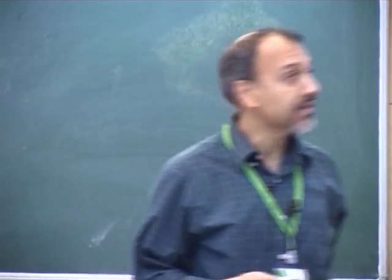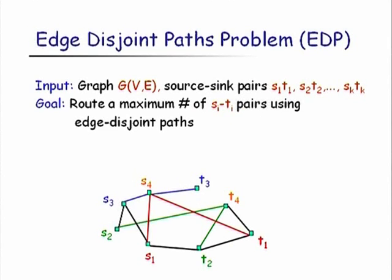I'm going to talk about a recent exciting result of Julia Chuzhoy about a classical problem known as the edge-disjoint paths (EDP) problem, also known as the Schoen-Path problem in networks. Let me start by defining the problem. You're given a graph along with a collection of source-sink pairs S1T1, S2T2, through SKTK, and your goal is to route a maximum number of these source-sink pairs in the graph in an edge-disjoint manner.